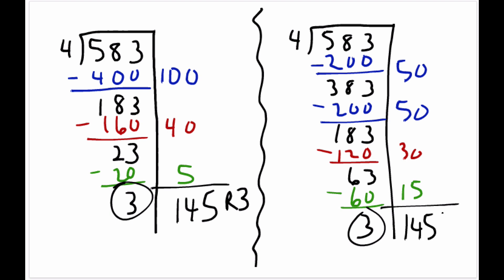And once again, we get 145 remainder 3. So we've got two different ways to demonstrate that 583 divided by 4 is 145 remainder 3 using the partial quotients method.